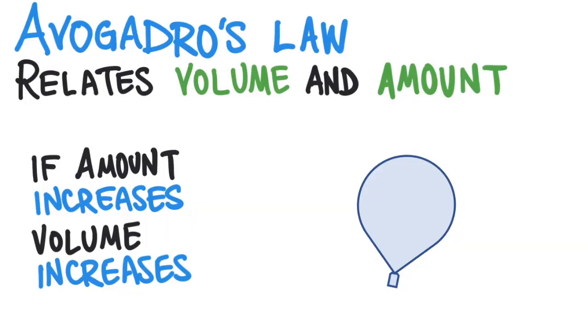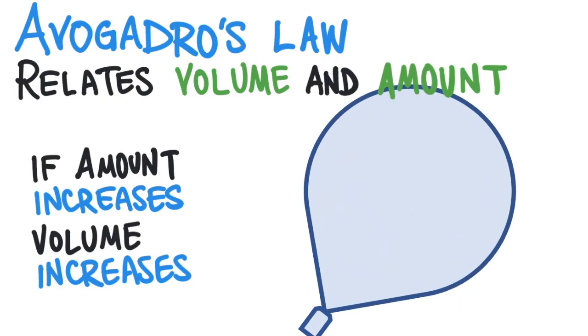Avogadro's Law describes the relationship between the volume and the amount of a gas when the temperature and pressure are held constant. Using words, Avogadro's Law can be described like this: if the amount of a gas increases, the volume of the gas will increase.